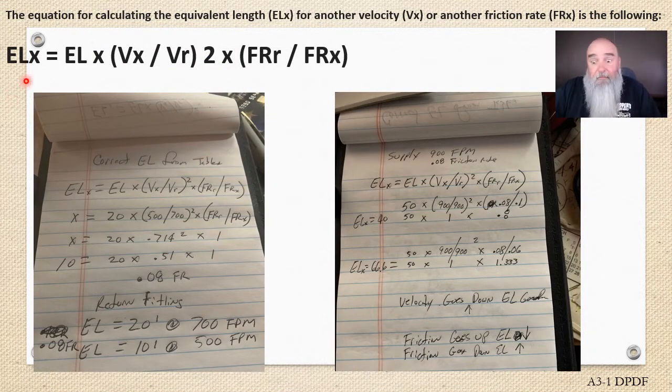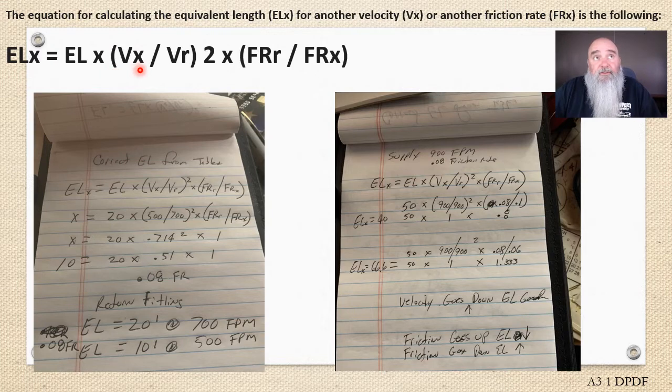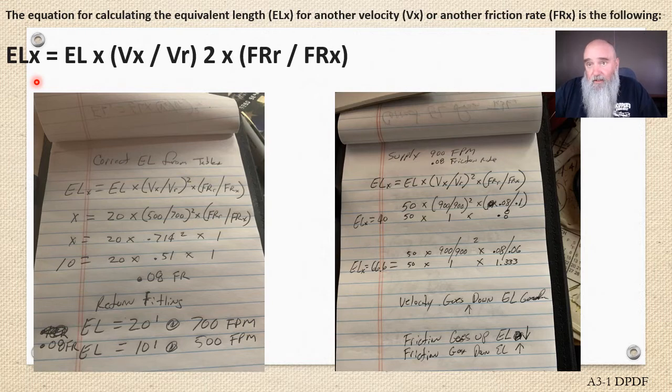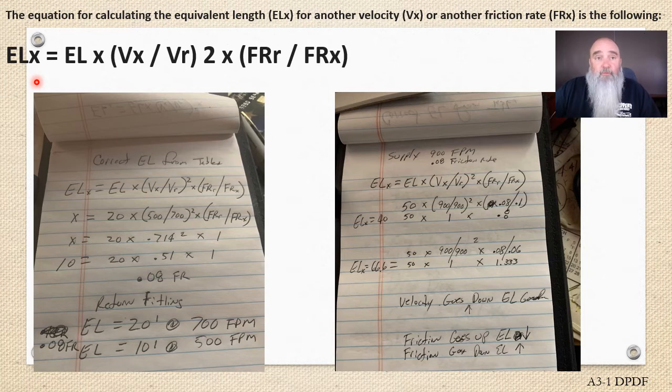So this is the math, and I'm going to call it the heavy math because any math with letters to me is heavy. But there is a process in Manual D that they don't highlight, but essentially what it is giving us the ability to do is to correct for those equivalent lengths, where those pressure drops as they will exist with a different velocity.